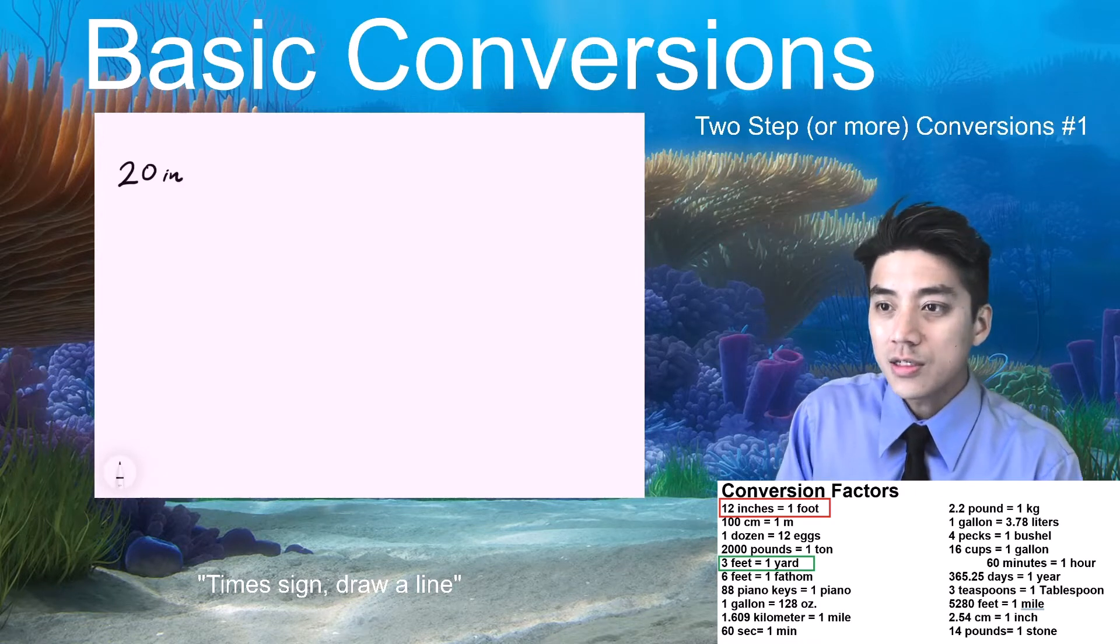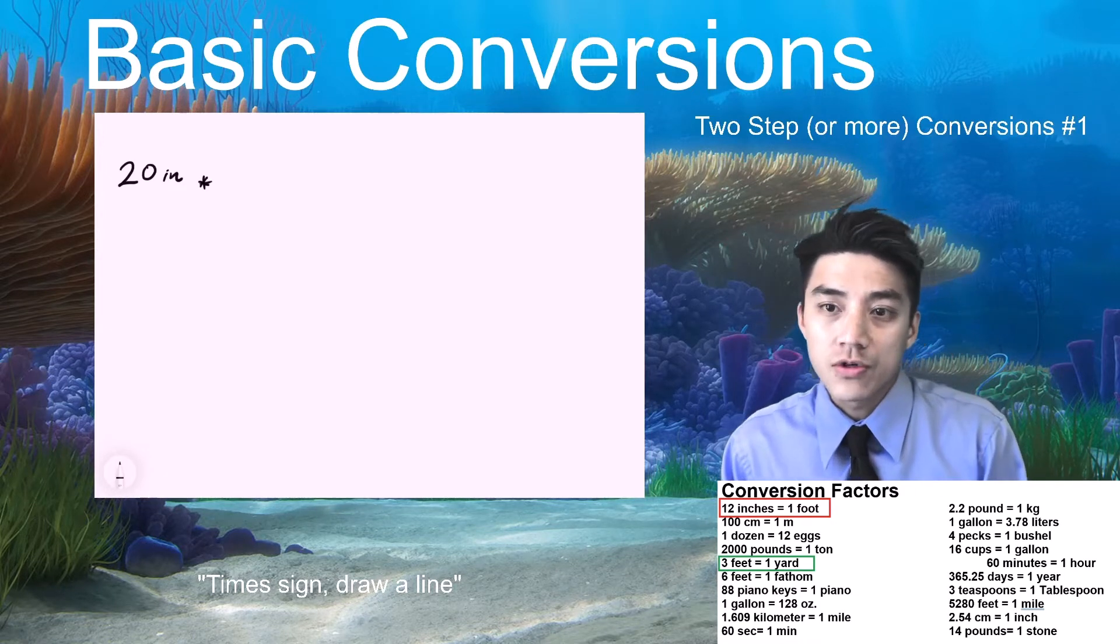Okay, so it gets more challenging. This one is the 2-step or more conversions. Problem number 1.